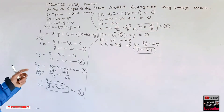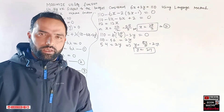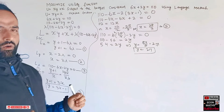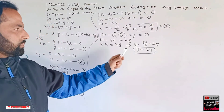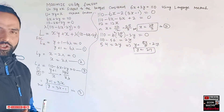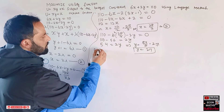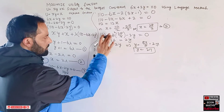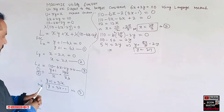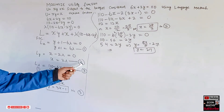We have found the optimal combination of x and y. We can optionally calculate lambda, but it is not strictly necessary since to find maximum utility we just need to plug x and y into the objective function. Let's calculate lambda using equation two.